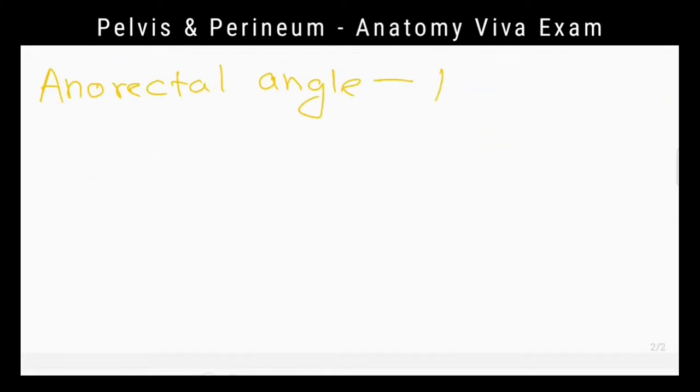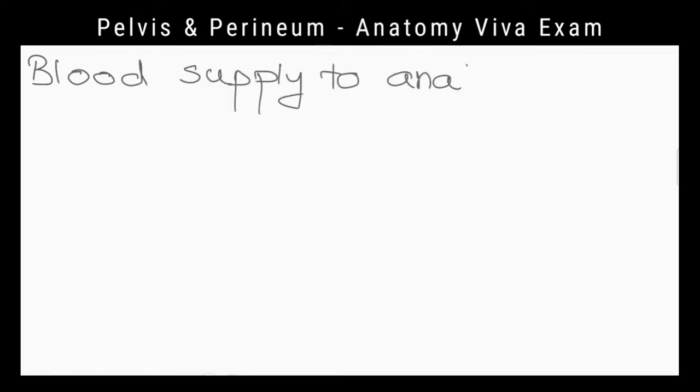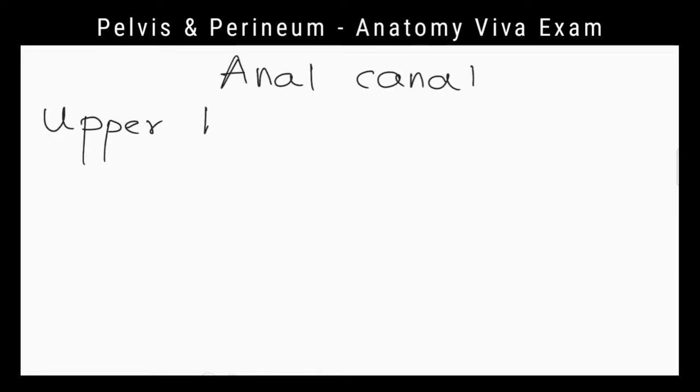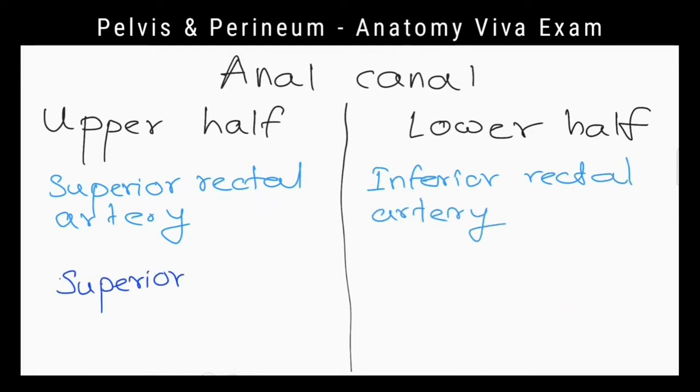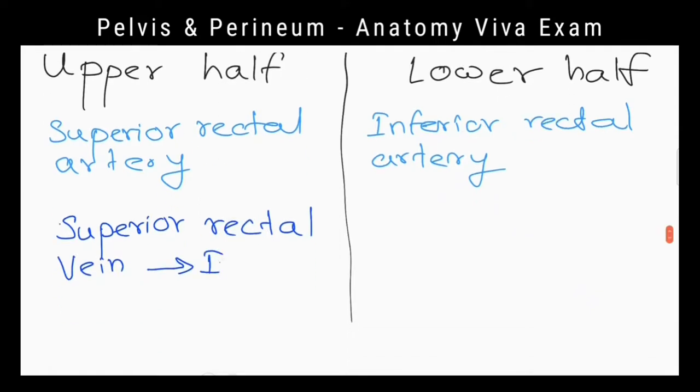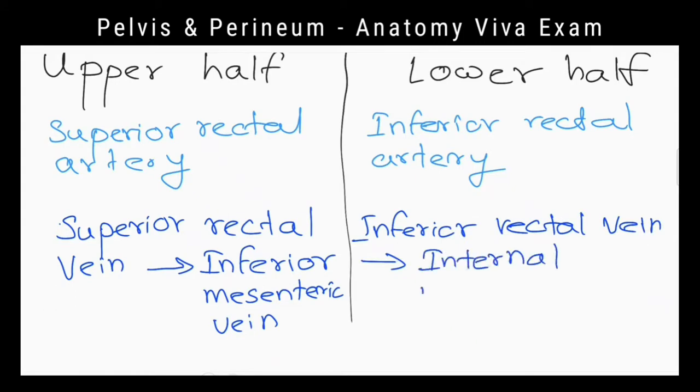What is the blood supply of anal canal? Superior rectal artery supplies the upper half of anal canal. Inferior rectal artery supplies the lower half of anal canal. Upper half is drained by superior rectal vein into inferior mesenteric vein, and lower half is drained by inferior rectal vein into internal pudendal vein.